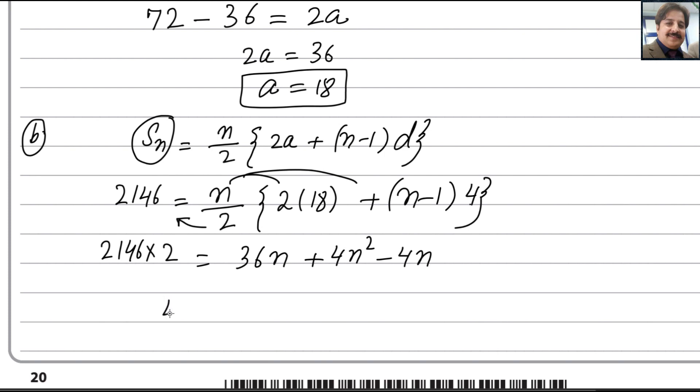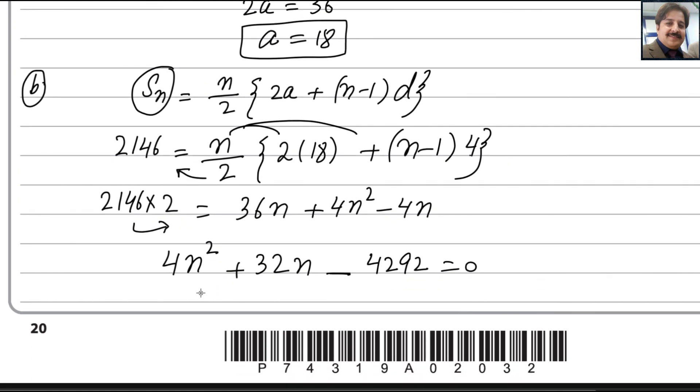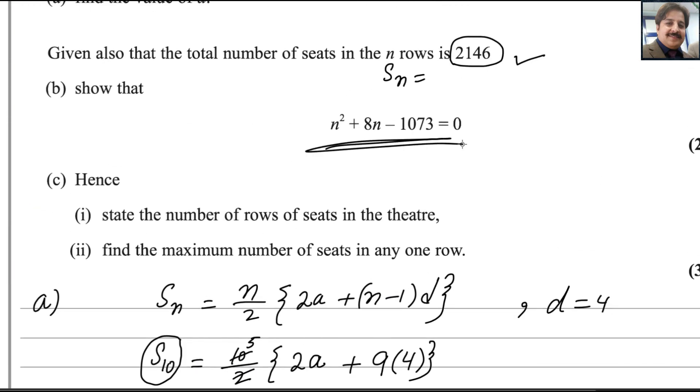So simplifying, we can write as 4n². 36 minus 4n will be 32n. And then, you bring this to the right. It will be 2146 multiplied by 2. We get the answer. This is 4n² + 32n. 36n minus 4n is 32n. And minus, this will be minus if you take it to the other side. 4292 equals 0. So, simple is that you can divide by 4. Everything. So you will get the answer here. It will be divide by 4. Therefore, it will be n² + 8n - 1073 = 0. It is as required in the question. So hence proved it is like that. We need to prove this thing. We have proved it.